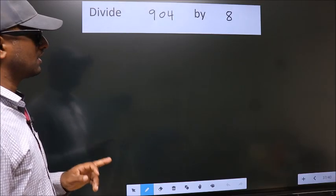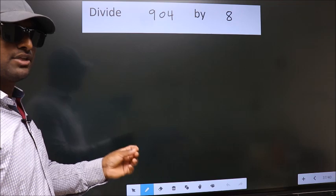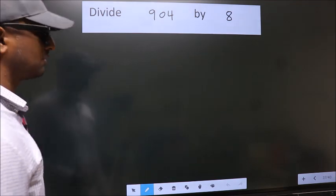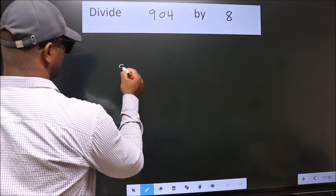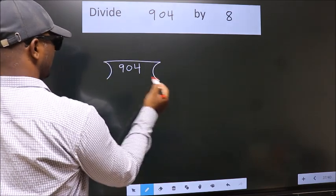Divide 904 by 8. To do this division, we should frame it in this way: 904 here, 8 here.